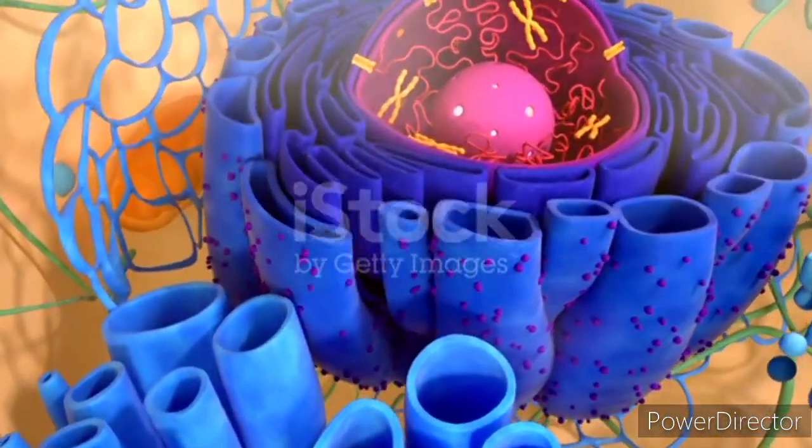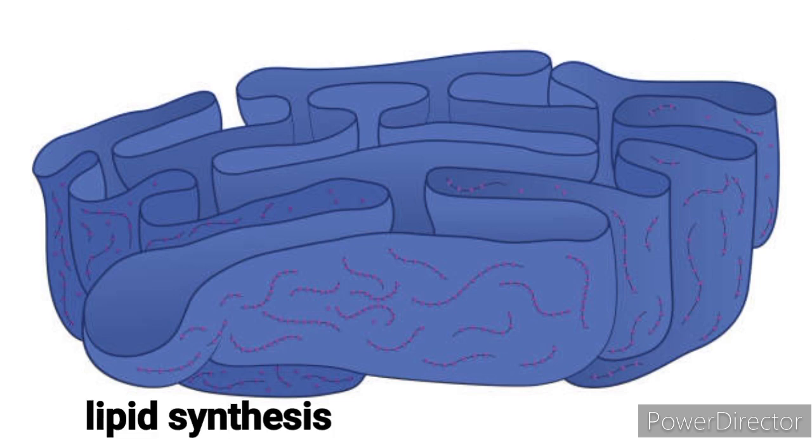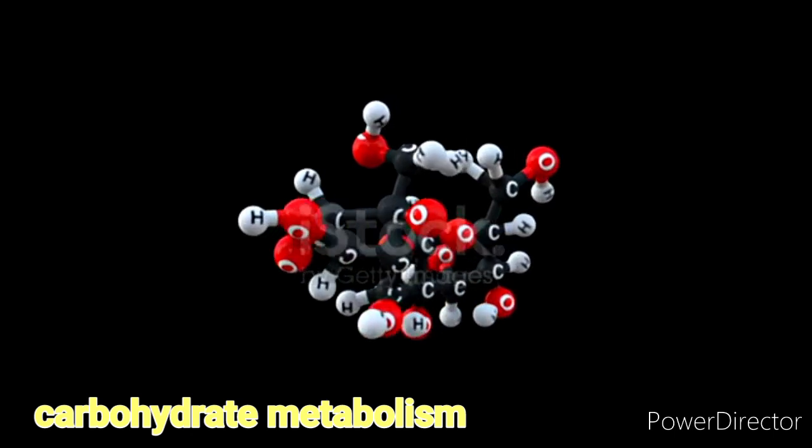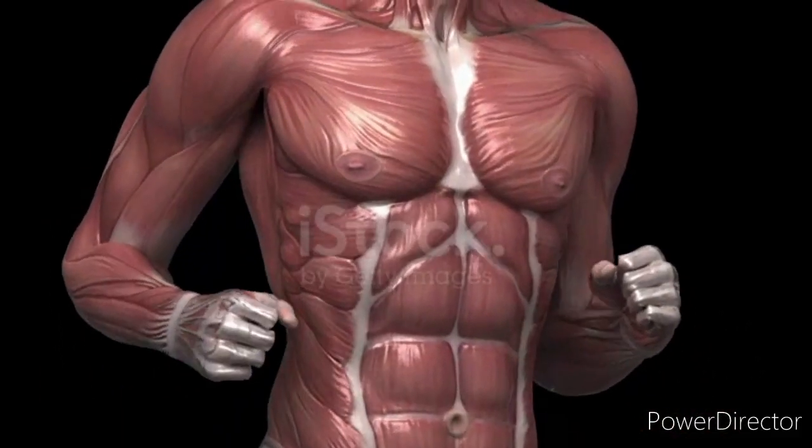The smooth endoplasmic reticulum lacks ribosomes and appears smooth in structure. Its functions include lipid synthesis, metabolism of carbohydrates, detoxification of drugs and toxins, and storage of calcium ions crucial for various cellular processes.